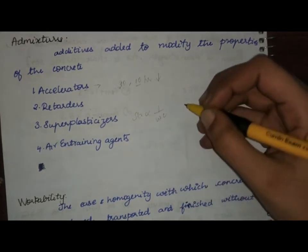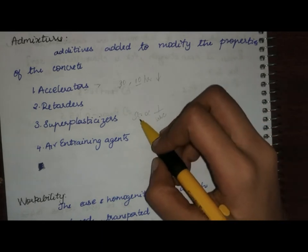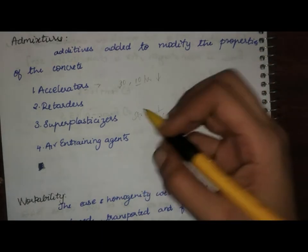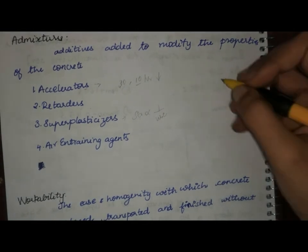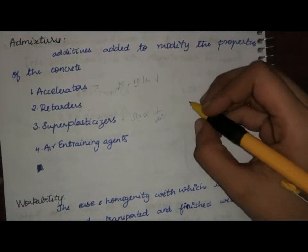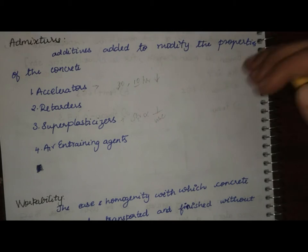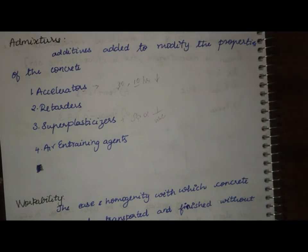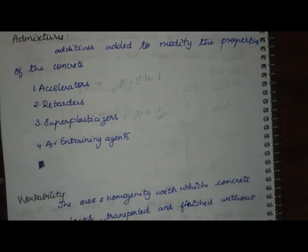Next is super plasticizers. We know that the strength of concrete is inversely proportional to the water-cement ratio — if the water-cement ratio is less, the strength will be more. So in order to reduce the water in the concrete we go for super plasticizers. In the mix design itself, the water is enough to complete the whole hydration reaction, but some water is not utilized properly due to evaporation.